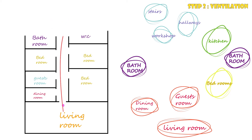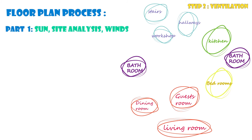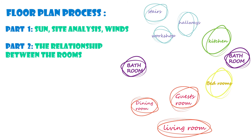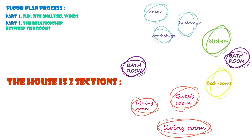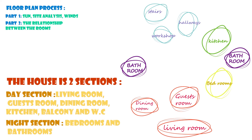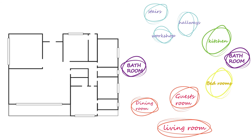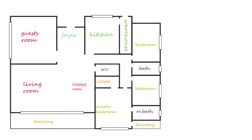To help with this, you need to know there are two parts to this process: the outside part, where we consider sun, site analysis, and winds; and the second part — more important than the first — where we consider the relationships between rooms inside the house. Keep in mind the house has two sections: the day section, which includes the living room, guest room, dining room, kitchen, balconies, and WC; and the night section, which includes bedrooms and bathrooms. You need to understand the relationship between each room.